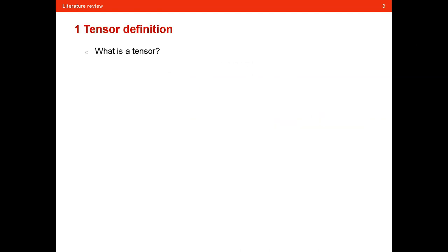Let's begin with the tensor definition. In my view, a tensor is basically a pool or a structure to define data. At the very beginning we have a scalar, which is only one data point. For example, you can view the height or weight of a person as a scalar. A scalar is a tensor of order zero because there are no other dimensions on this data.